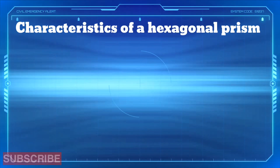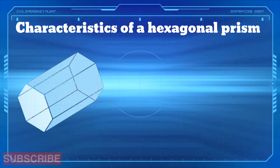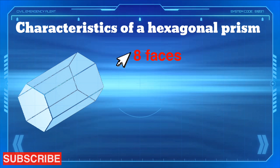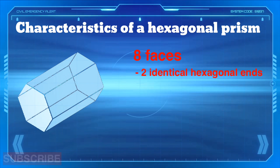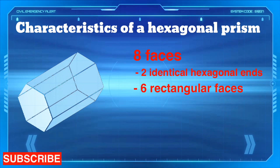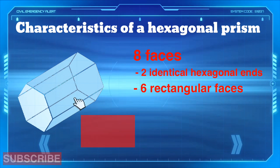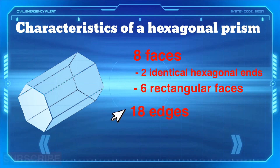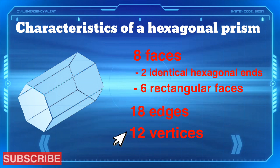Characteristics of a hexagonal prism. A hexagonal prism has 8 faces with 2 identical hexagonal ends and 6 rectangular faces. It has 18 edges and 12 vertices.